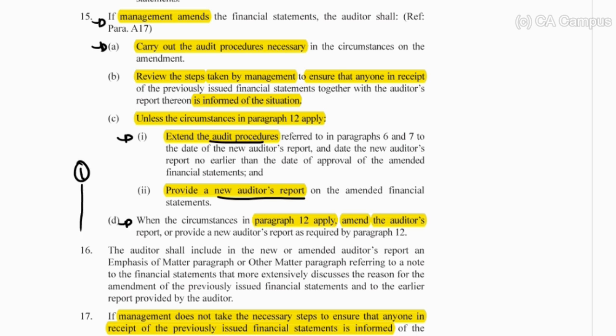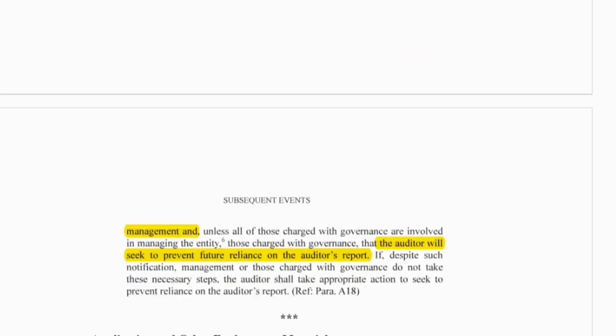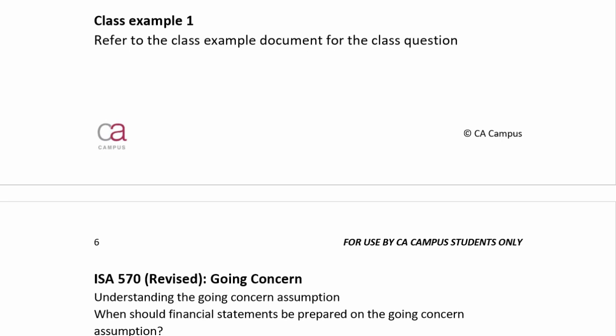The Period 3 procedures are largely the same as Period 2. However, the new element is: if management don't take the steps to inform users of the previous financials about this amendment, the auditor needs to take steps to notify those users that there is a new report they should use when making decisions about that business. That covers ISA 560.